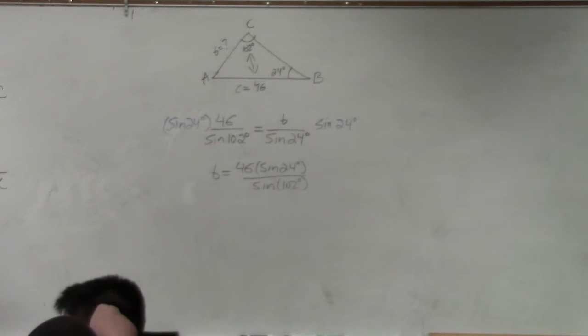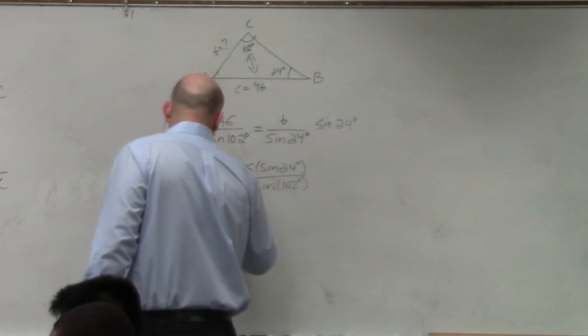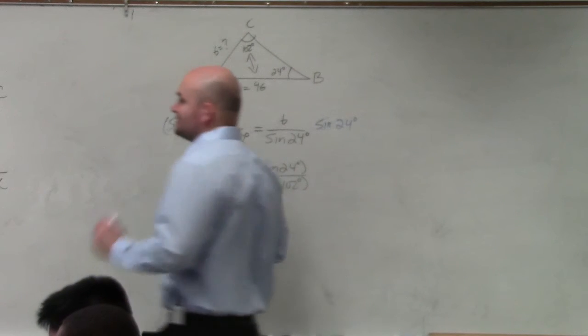And then I'm just going to hit the divide, which is going to take that last answer. Hit divide, sine of 102. And you guys can see the buttons that I pressed to get to that. And when I do that, I am now having to approximate my answer.